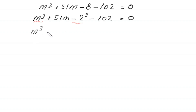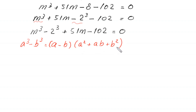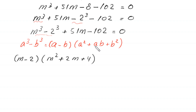So m³ − 2³ + 51m − 102 = 0. Factoring m³ − 2³ using a³ − b³ = (a − b)(a² + ab + b²) gives (m − 2)(m² + 2m + 4), and factoring 51m − 102 gives 51(m − 2). The equation becomes (m − 2)(m² + 2m + 4 + 51) = 0.